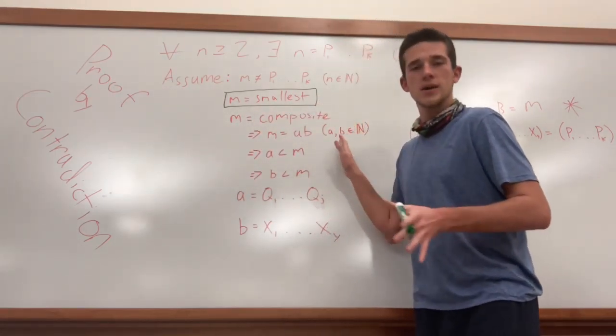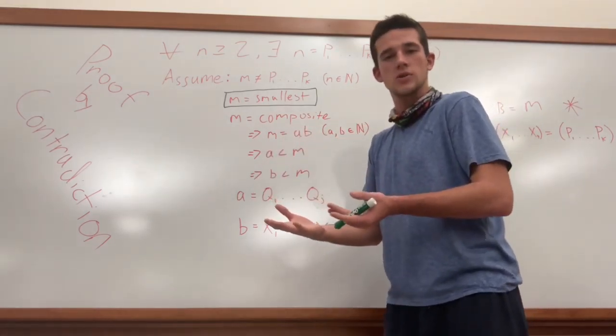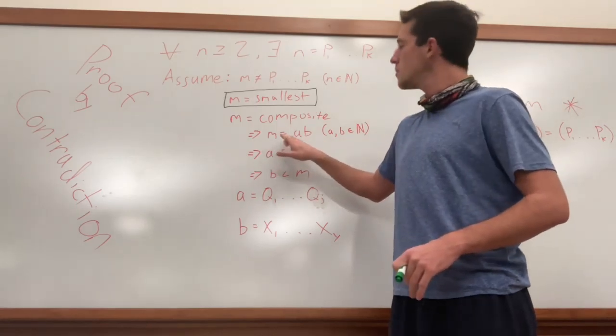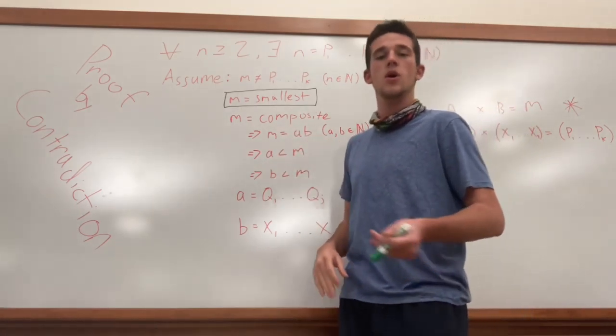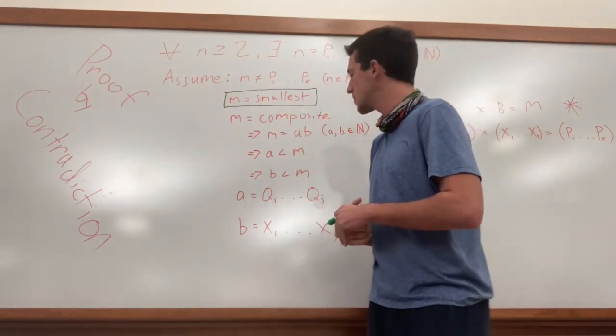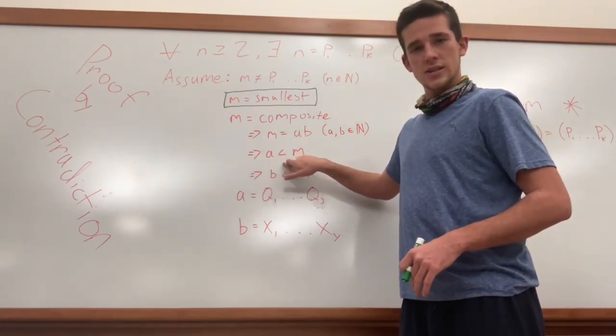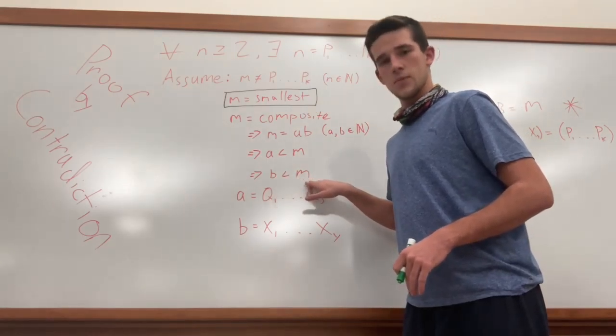If m is a composite number, we know that m is something times something else. So we're going to represent that something and something else by saying a and b. So m equals a times b, and a and b are also elements of the natural numbers. From this, because a and b are natural numbers, we know that a is less than m and b is less than m, okay?